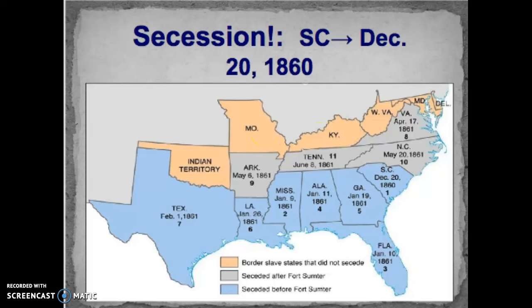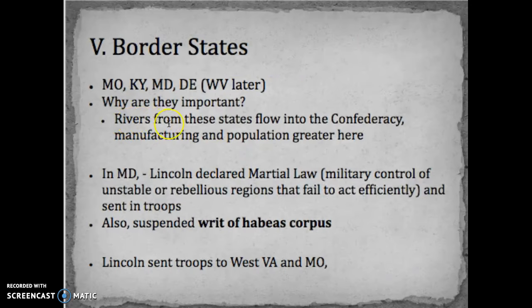The border states — Delaware, Maryland, West Virginia, Kentucky, and Missouri — will not secede from the Union. West Virginia is created when Virginia decides to secede and West Virginia chooses to stay. Four out of five of these states are slaveholding states. Lincoln is worried throughout the entire Civil War that these states will eventually secede, so he will take steps to keep them in the Union. These states are important because rivers flowing from them into the Confederacy aid manufacturing, and their populations are generally larger than other Southern states.